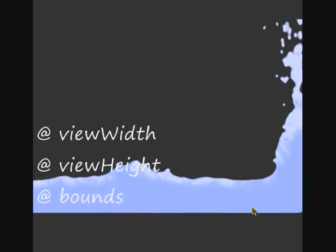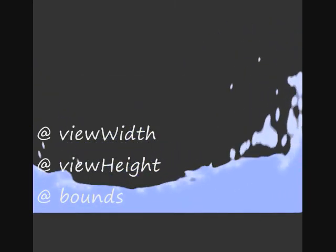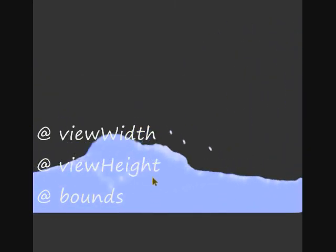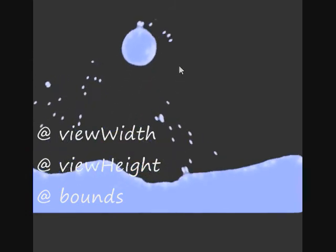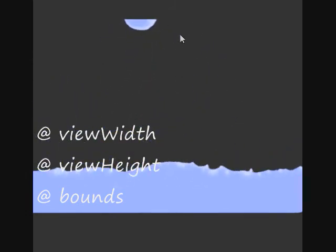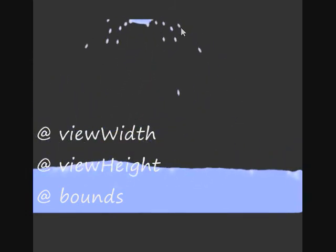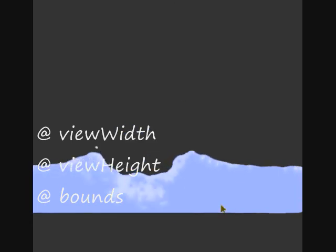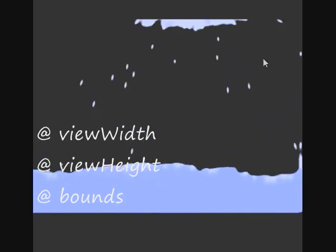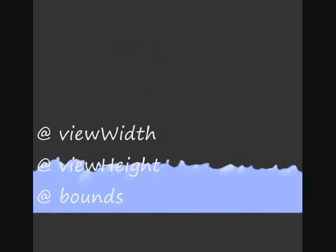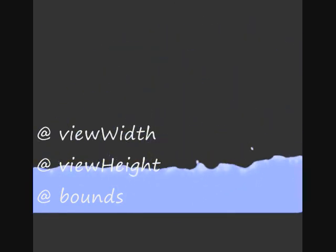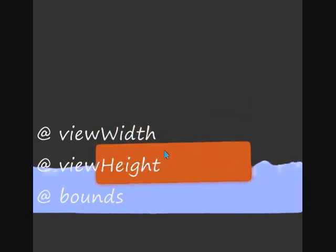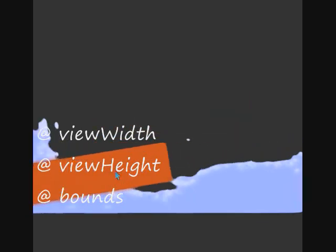Basically, view is like your camera — what you can see — and bounds is the play area. I've messed with the settings a bit and I can push stuff out of the screen because it's out of view but not out of bounds. And I'll just mess with it a bit more randomly.